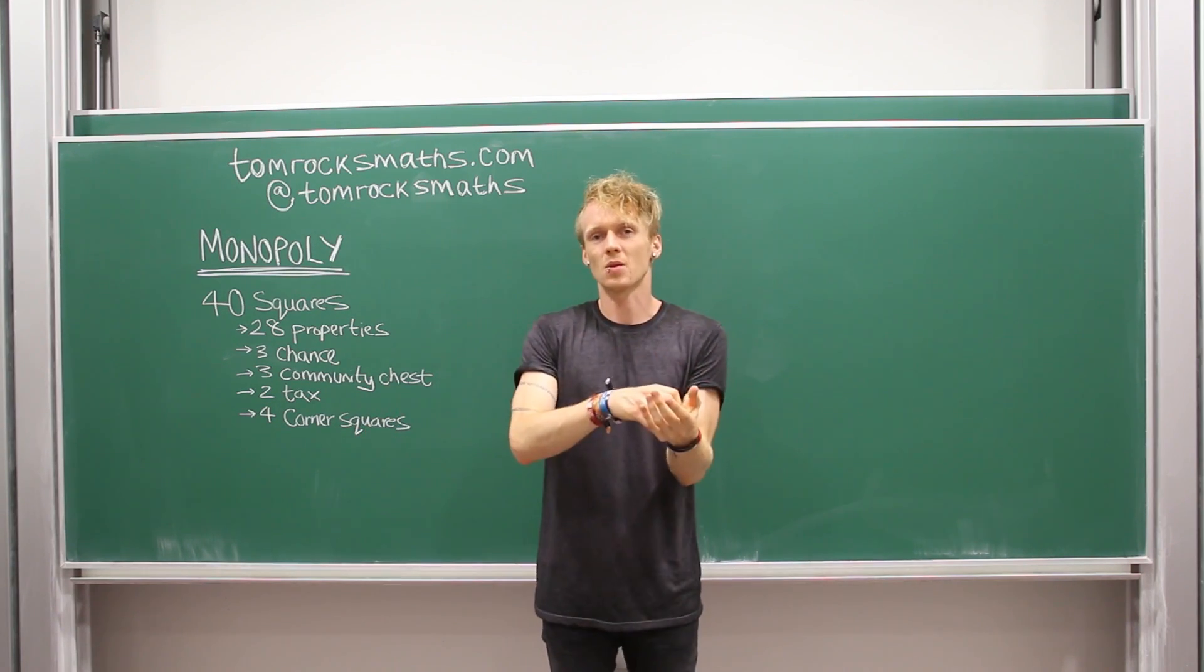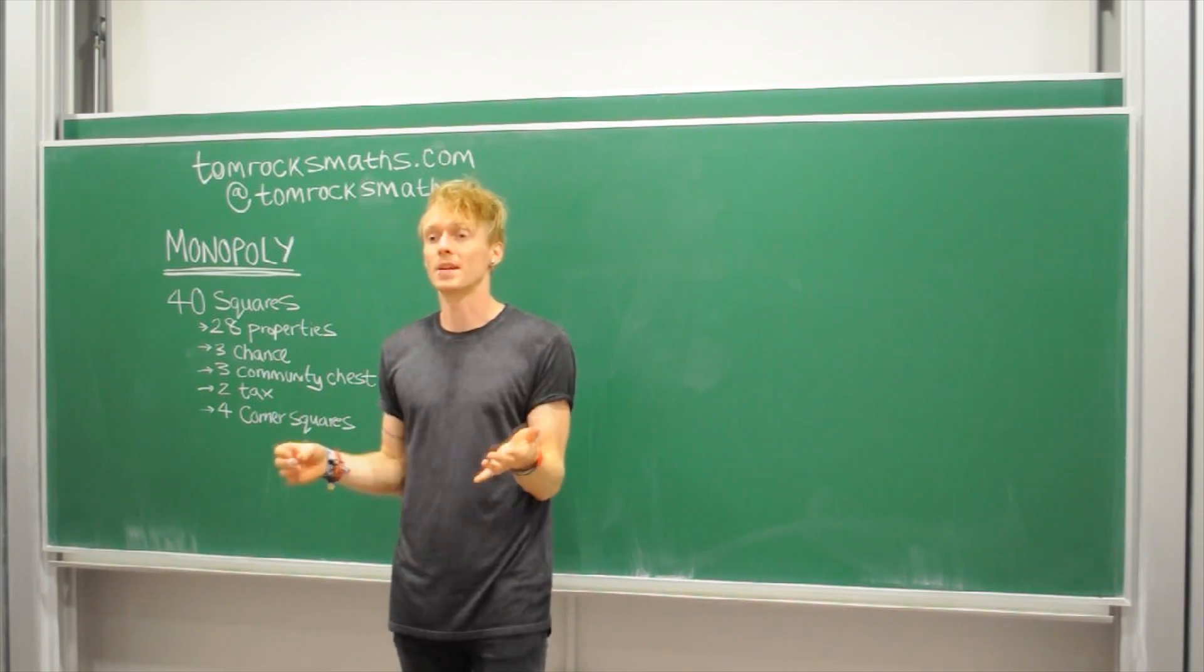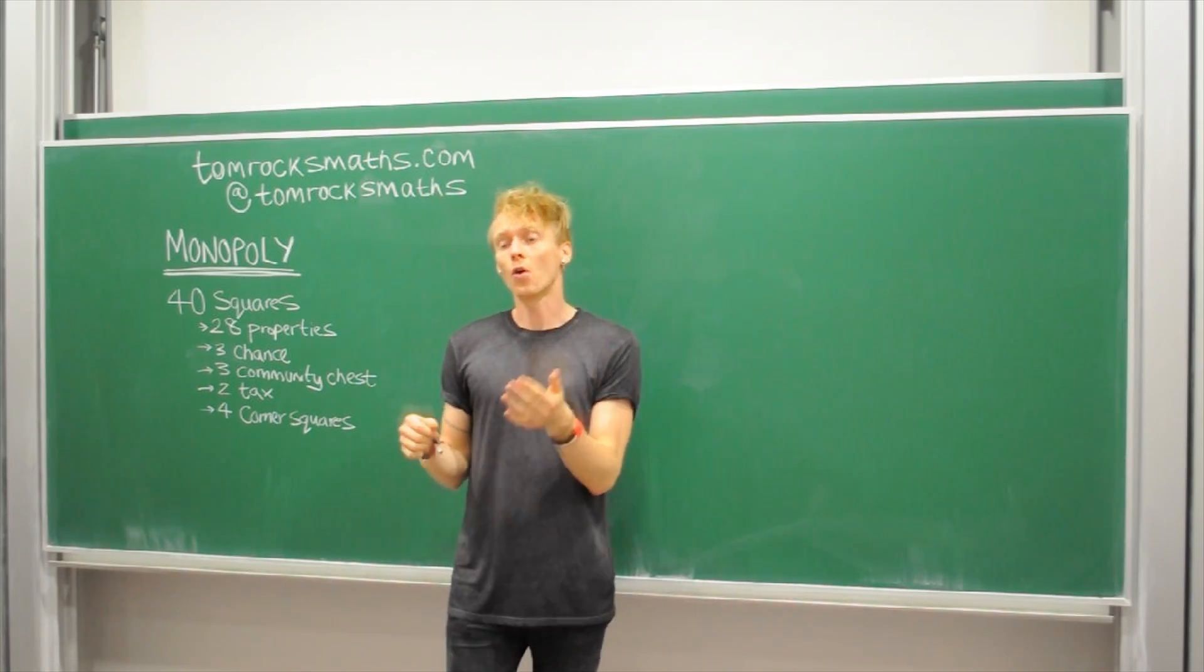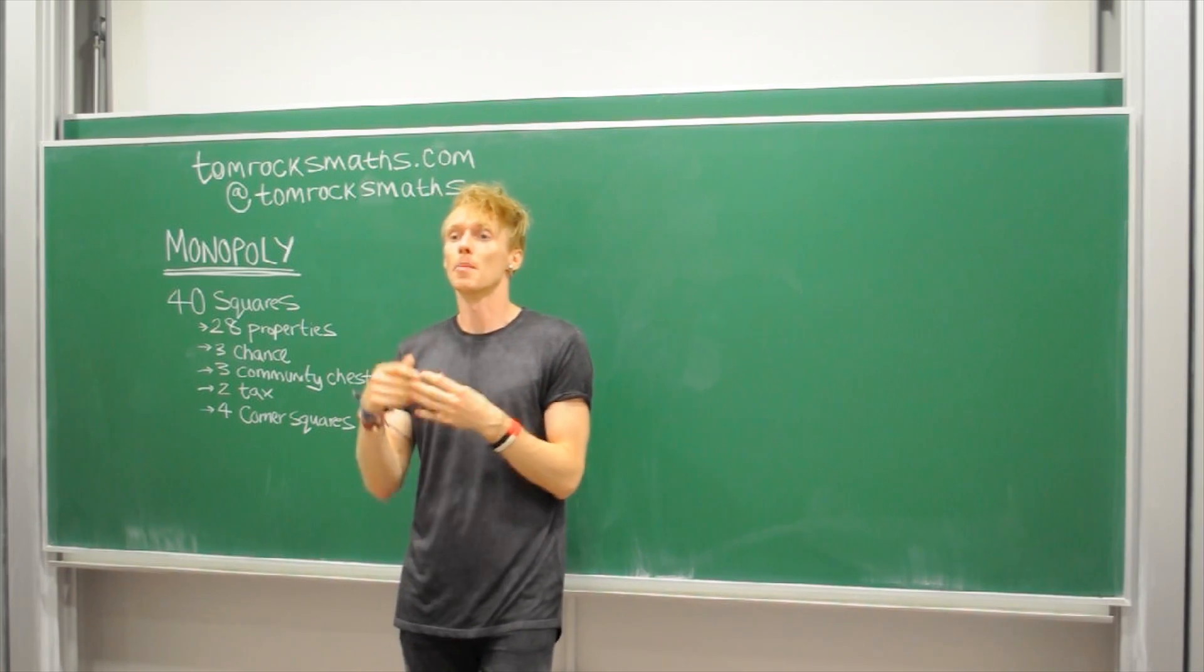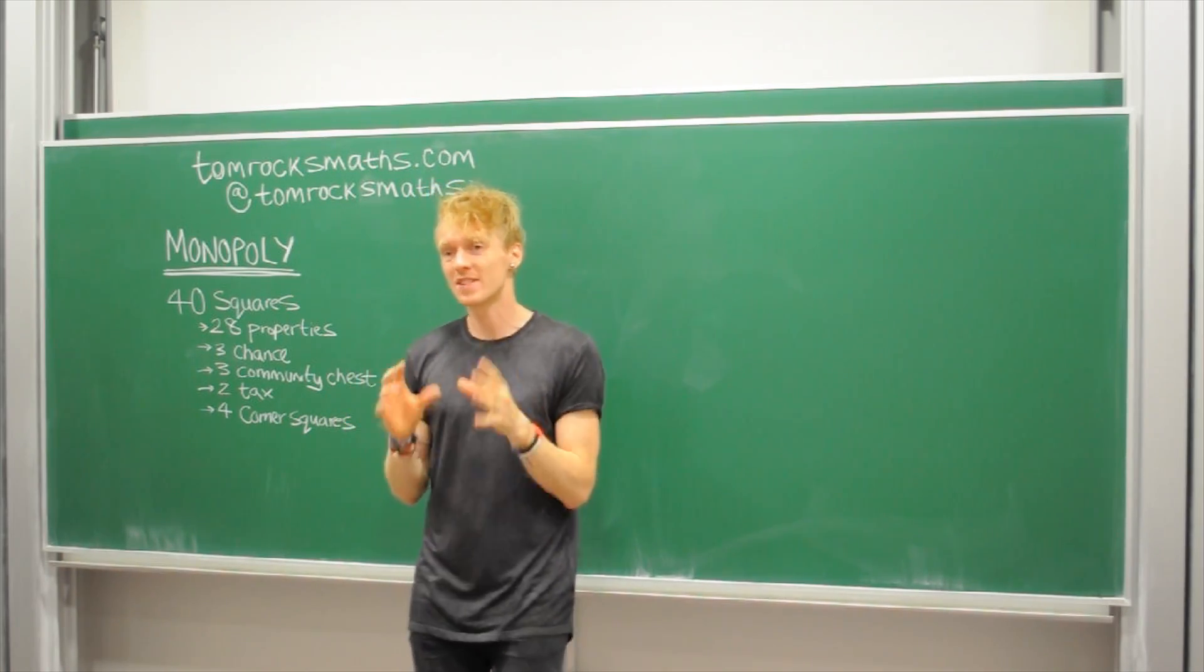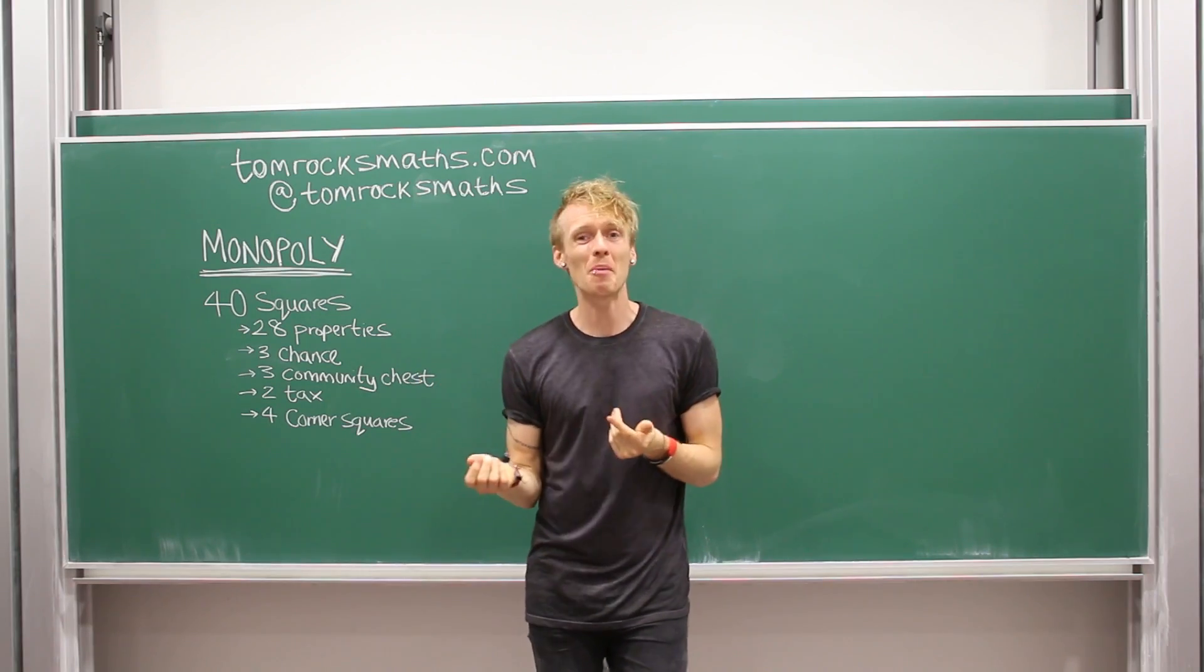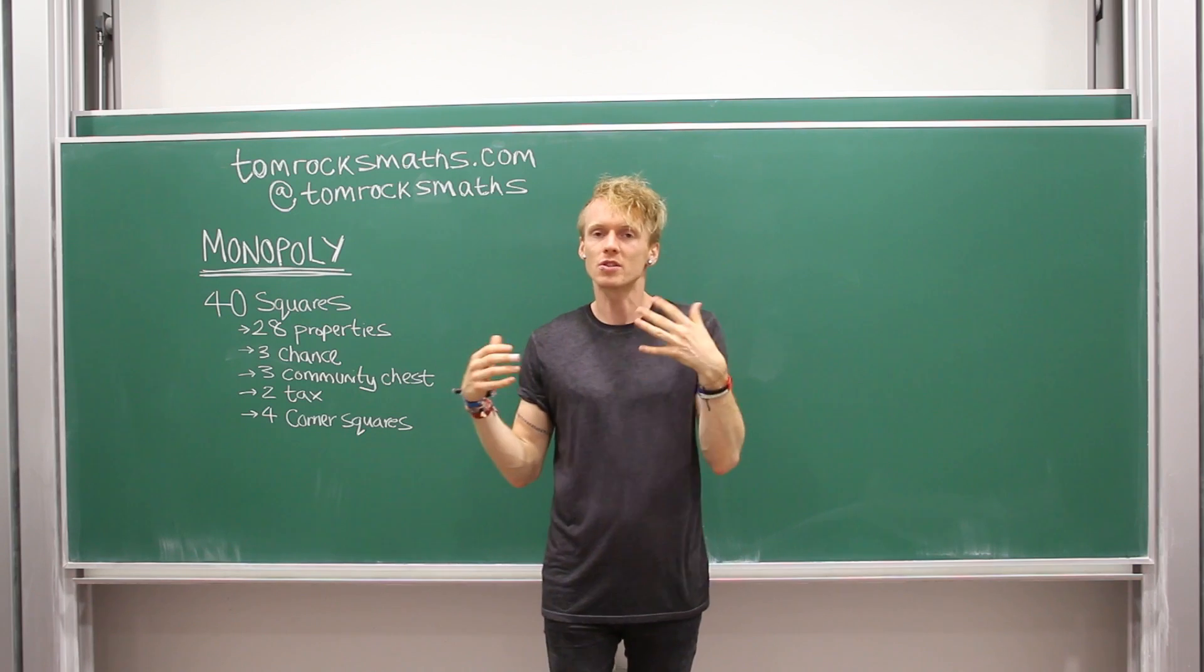So the go to jail square may as well be the jail square. In a game of Monopoly somewhere between four and six percent of all turns will end up on the square jail. So jail is the most visited square on a Monopoly board. Doesn't really help us yet because of course you can't buy jail.